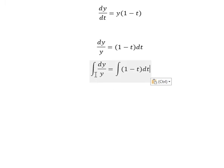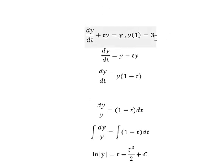The integration of this one we have ln of the absolute value of y. The integration of one we have t, the integration of t we have t squared over two, and we add C. Now we have the condition in here.